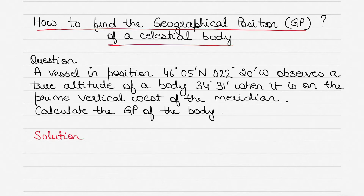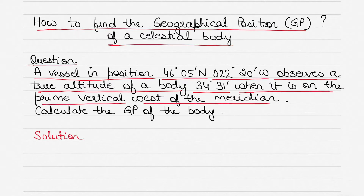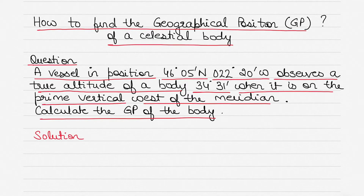Today's question: a vessel is in position 46°05'N and 22°20'W. An observer on this vessel observes a true altitude of a celestial body — it could be sun, moon, star, or planet — of 34°31'. The true altitude was observed when the body was exactly on the prime vertical, west of the meridian. The question says: calculate the GP of the body.